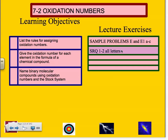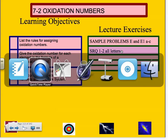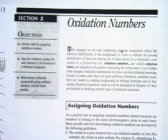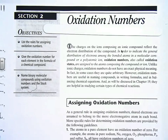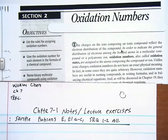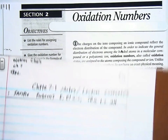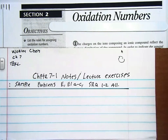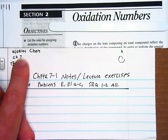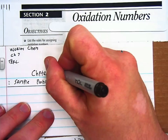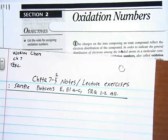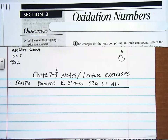For our learning activity today, you are going to need your book. I'm going to have a copy of the book right here — Oxidation Numbers. You are going to need a paper. I'd like you to head your paper something similar to this. You see my paper here, where your name will go instead of Worley. Chapter 7-2. Notes, slash lectures, exercises.